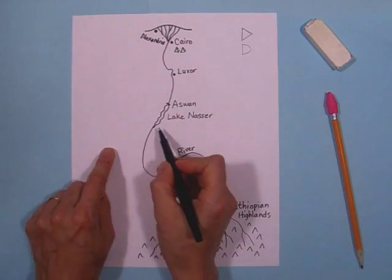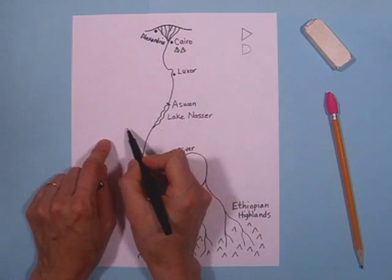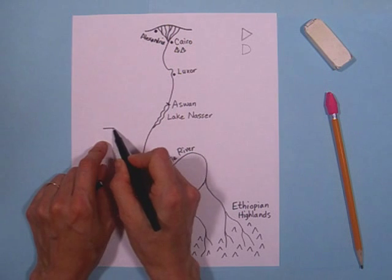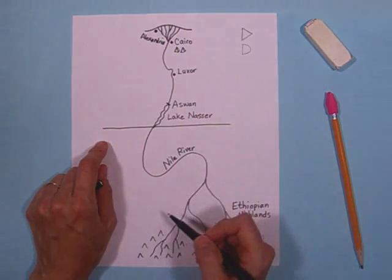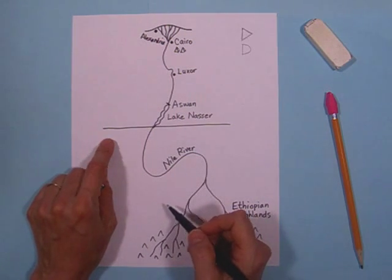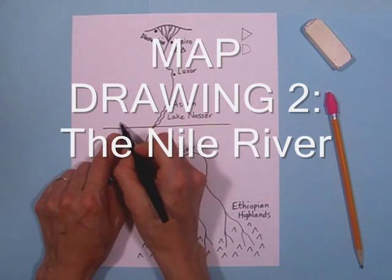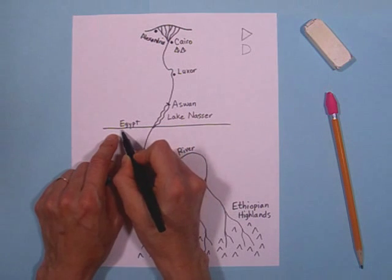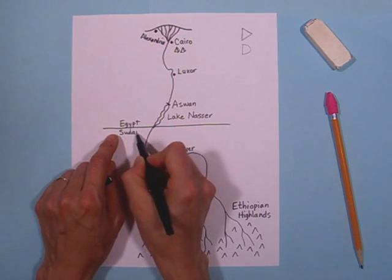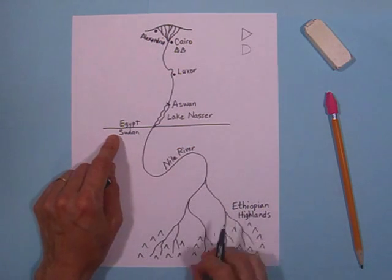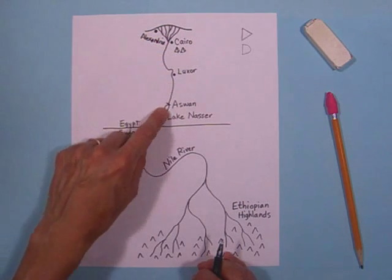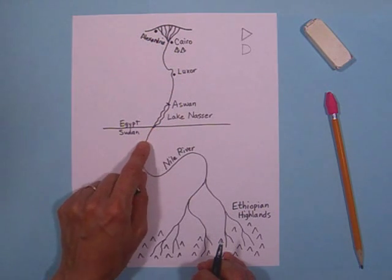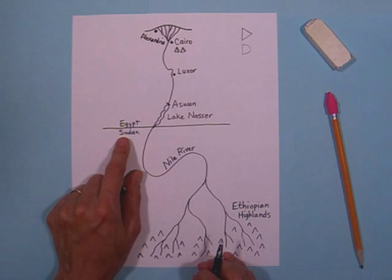And now I'm going to draw a line right at the bottom of Lake Nasser. Just draw a line across like this. It doesn't have to be perfectly straight. This just tells me where the bottom of the country of Egypt is. I'm going to write Egypt above the line and I'm going to write Sudan below it. So the country of Egypt only has this much of the Nile River. A lot of the Nile is in Sudan.